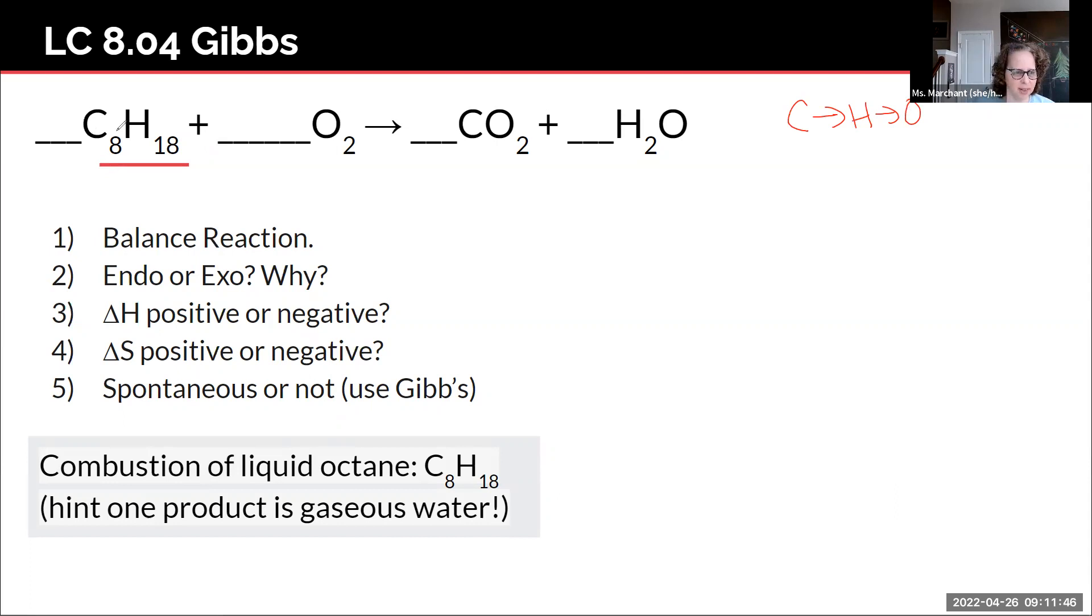So how many C's do I have? I have eight carbons. So that means I need eight carbons on the right side. The left side, what is that side called again? Reactants. And the right side is called products. And so we need eight carbons on the product side. How many carbons do we have now? We have one.